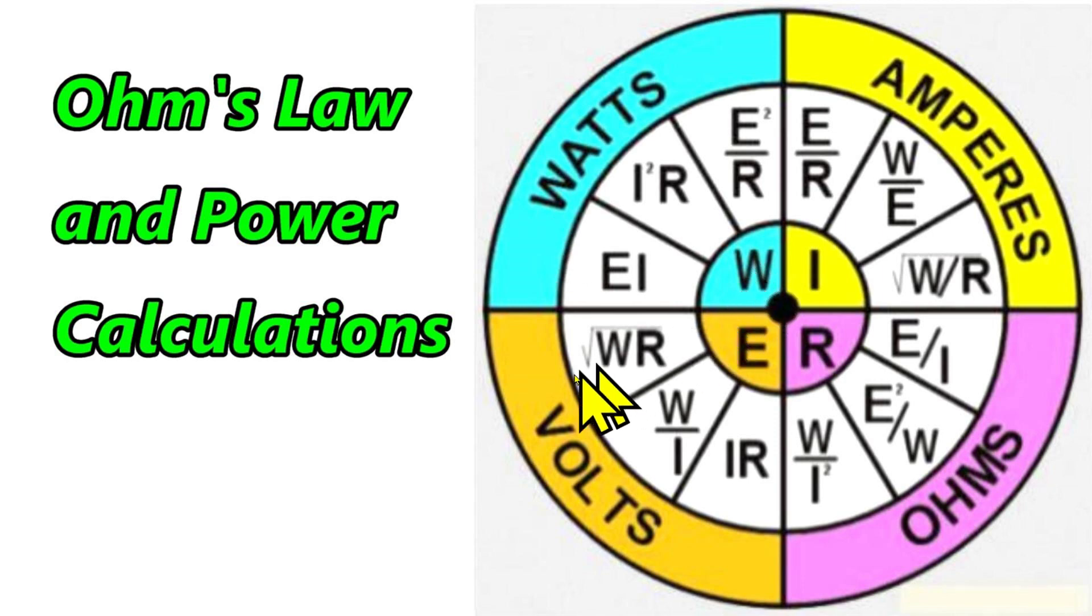And where I'd like to start in explaining this is right here at volts. And I'd like to go to right here. So we have amps times ohms equals volts. That is Ohm's Law in probably its simplest form. Amps times ohms equals volts. So let me show you an example of this.